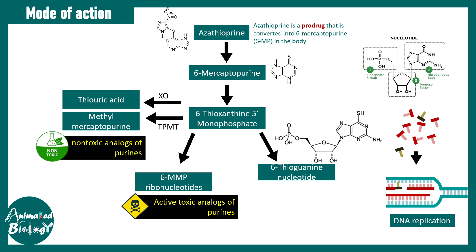Because of this pathway, the drug allopurinol — a gout medication that blocks xanthine oxidase — cannot be used in combination with azathioprine. Blocking xanthine oxidase would stop non-toxic analog production, causing toxic derivatives of azathioprine to build up, increasing overall toxicity.